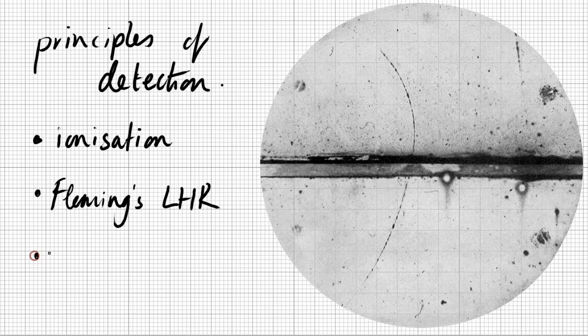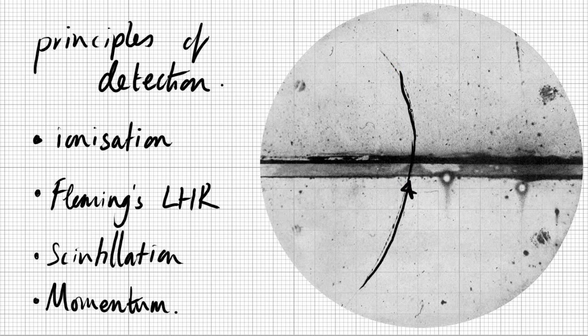And then the last principle is momentum. We can tell how much momentum a charged particle has by the amount of curvature. So this particle has less curvature before it hits this plate in the middle, and then more curvature afterwards. So we know the particle is moving in this direction, loses momentum when it does a collision through this piece of lead, and then the curvature is greater afterwards. But that can also not just tell us which direction it was moving, that could also tell us how massive the particle was or how fast it was going.